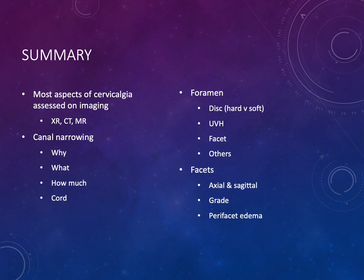In the last 12 minutes or so we've covered most aspects of cervicalgia assessable on imaging with x-rays, CT, and MRI. We've discussed canal narrowing — the structures that cause it, their effects, and how to describe them. We've covered cord assessment, foraminal narrowing and evaluation techniques, and facet grading and edema, including the importance of not missing infection or inflammation. Stay well and keep up the great work. Thank you.